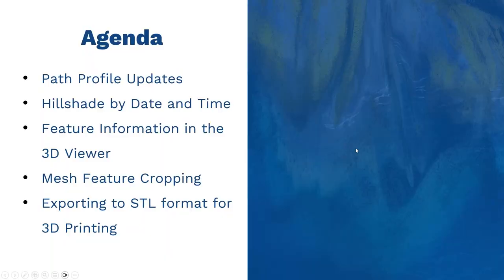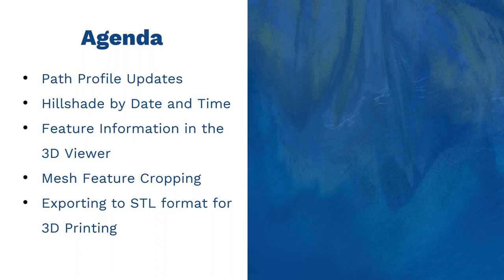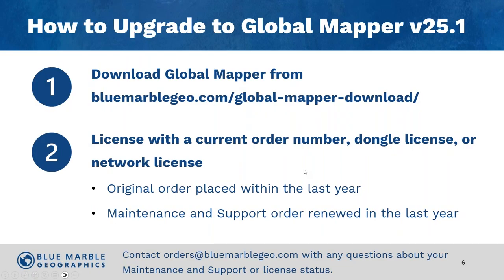Wrapping up the features covered in Global Mapper 25.1: path profile updates, hill shading updates with sun angle by date, time, and location, the Feature Information tool expanded to vector features in the 3D viewer, mesh feature cropping for meshes created or loaded in Global Mapper, and the new STL export for 3D printing with base and elevation scaling. One more topic: how to upgrade to version 25.1.